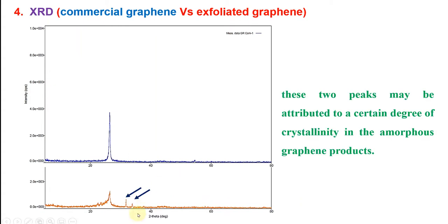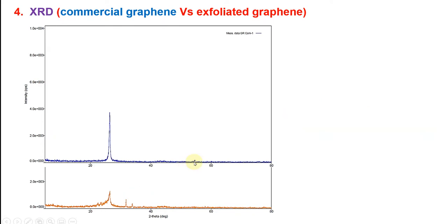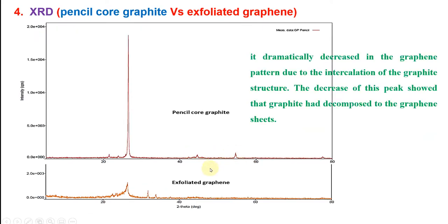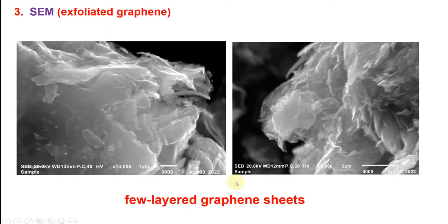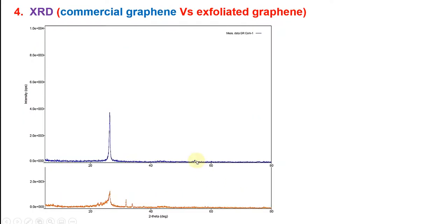However, you can see these two peaks occurring in my exfoliated graphene. Maybe this is attributed to a certain degree of crystallinity in the amorphous graphene products. This peak I saw in graphite you can see here. I don't see it in commercial graphene but I can see it in mine.